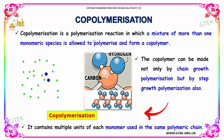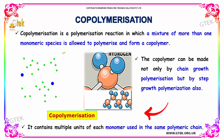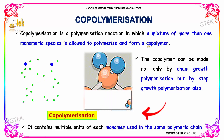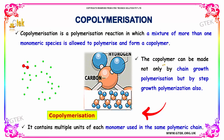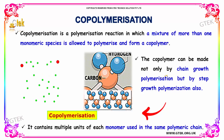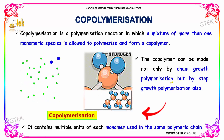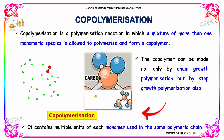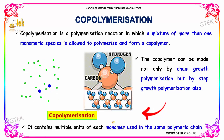Copolymerization is a polymerization reaction in which a mixture of more than one monomeric species is allowed to polymerize and form a copolymer. The copolymer can be made not only by chain growth polymerization but by step growth polymerization also. It contains multiple units of each monomer used in the same polymeric chain.